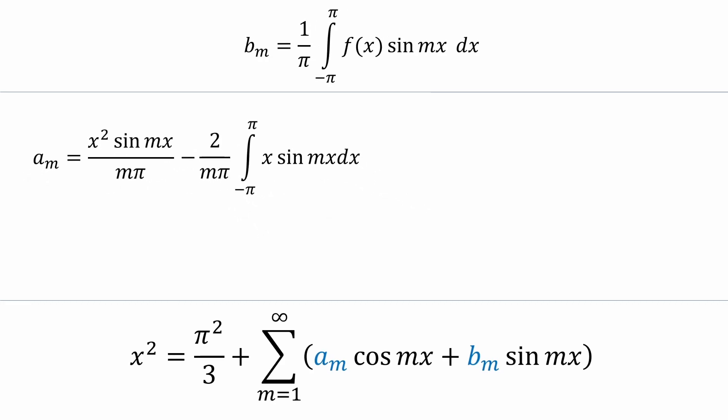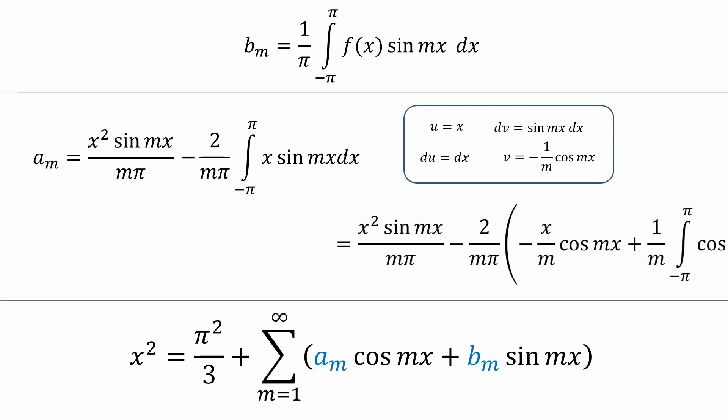It looks like we'll have to integrate the x times sine mx integral using parts one more time. We'll let u equal x and dv equals sine mx dx. Then du will be dx and v will be negative 1 over m times cosine mx. The resulting expression looks like this.